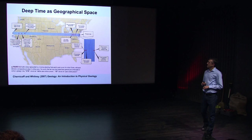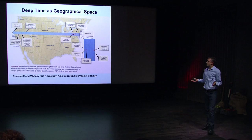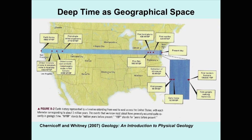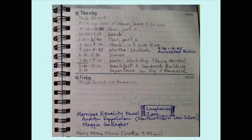Here's another analogy that's sometimes used: comparing deep time to geographical space. In this example, the beginning of Earth history is here on the West Coast in San Francisco, and time moves toward the present as we move toward the East Coast. Interestingly, all human evolution happens in New Jersey, and civilization is born in Atlantic City.